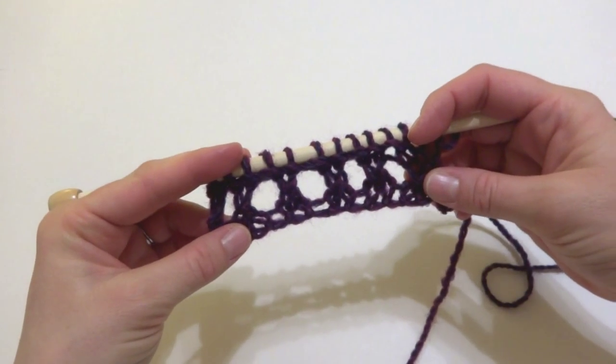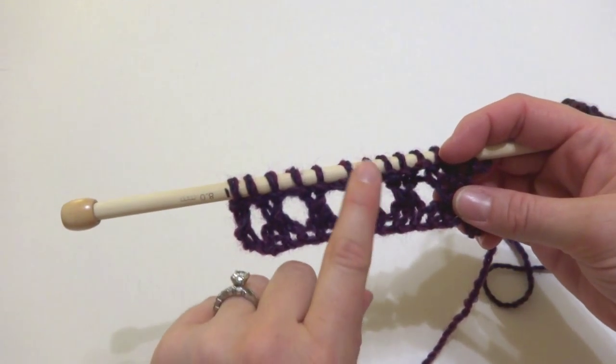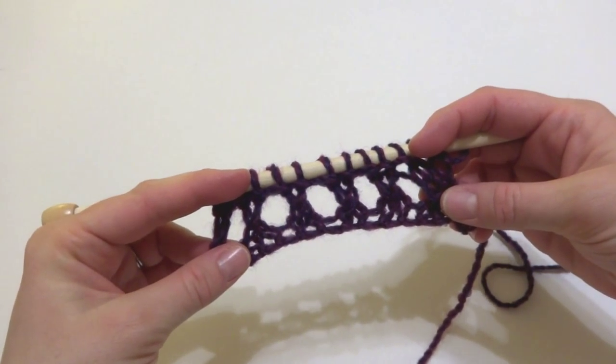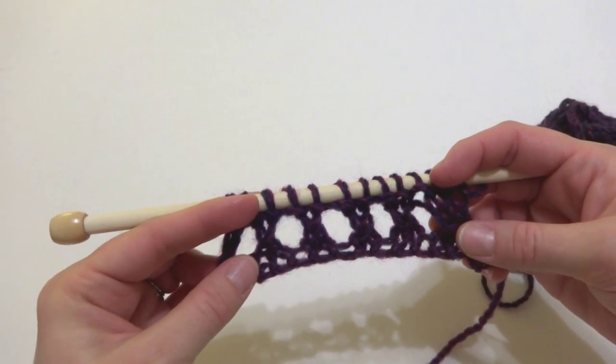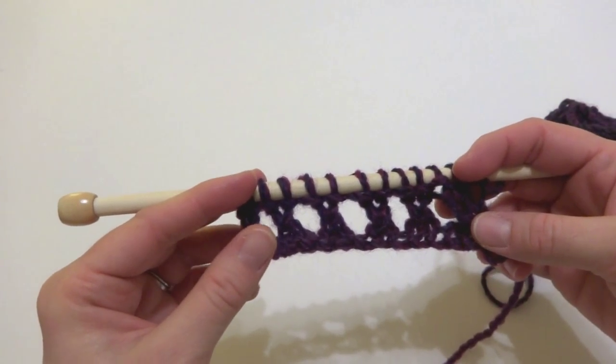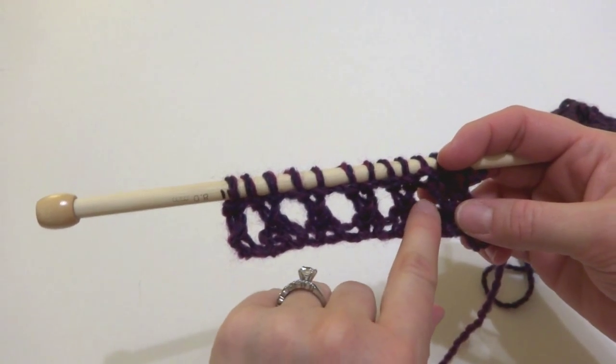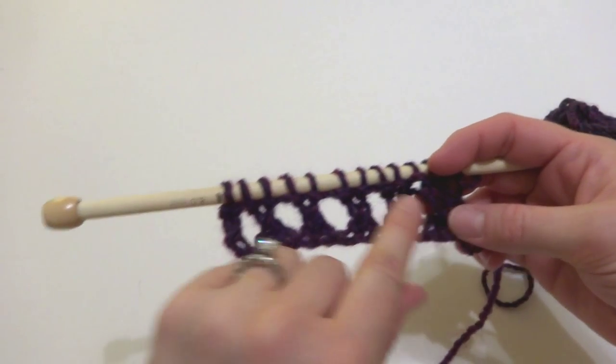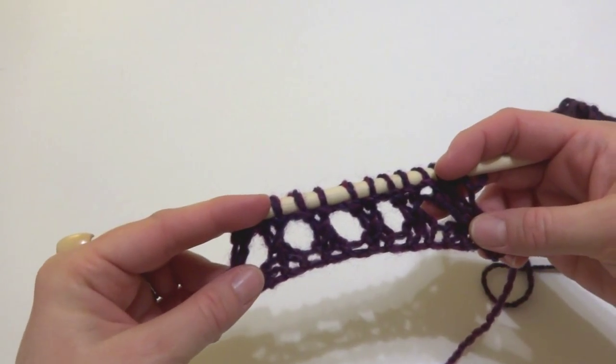And as you can see, just by doing these yarn over and knit two togethers, we've created these lovely eyelet holes. Now you can use these eyelets as a decorative element in your work. You could weave a piece of ribbon in between them to create another decorative element, or even a drawstring to tie something together.